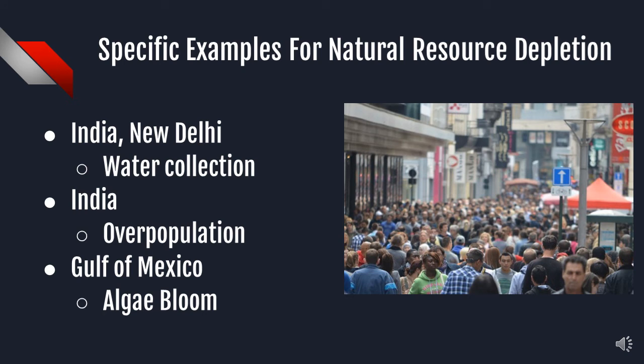These are some stories about natural resource depletion. In 1997, in New Delhi, India, a teacher installed water collectors on the roof of many buildings. This reduced dependence on the government and was able to save thousands of dollars.